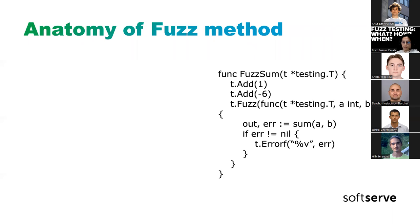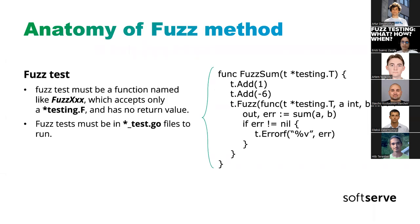To see how to implement it, we need to look at the anatomy of a fuzz method. If you already write unit tests, it will look a little similar. Our fuzz method should start with the prefix 'Fuzz' followed by any name. It should accept only one argument, which is of type testing.F. It should be in a file with the suffix '_test', the same kind of files as our unit tests.